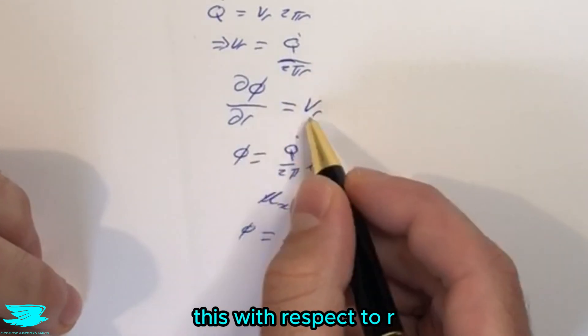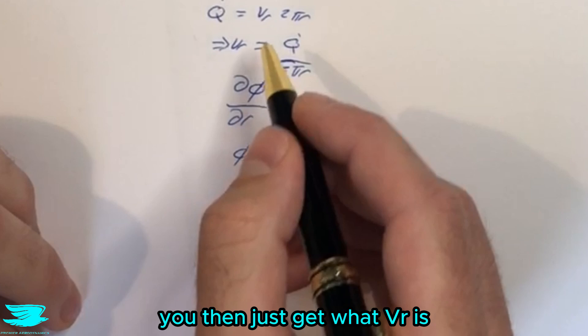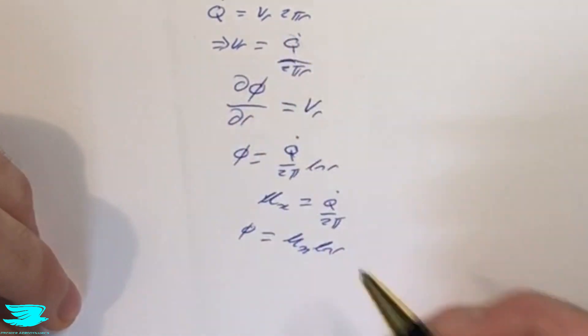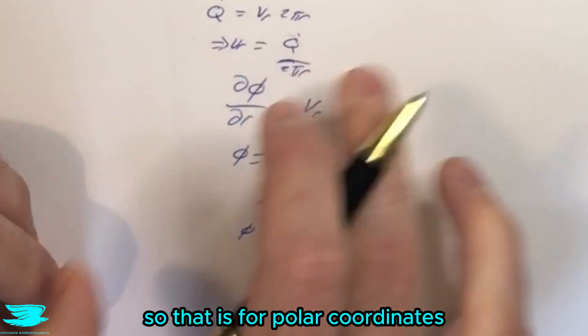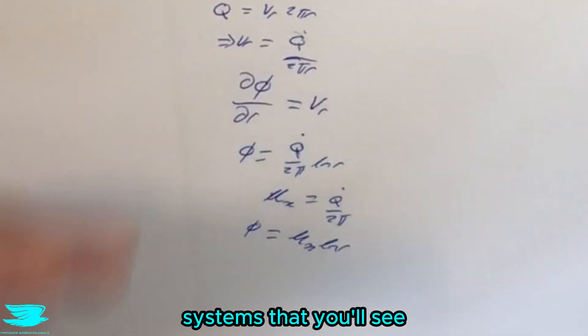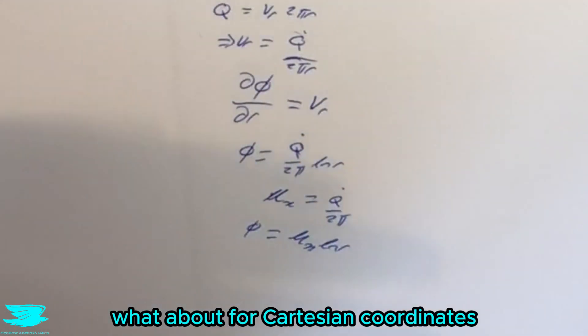And if we were to differentiate this with respect to r, you'd then just get what v_r is, which is this equation here. And that would actually be μ_x over r. So that is for polar coordinates and the two different general systems that you'll see. What about for Cartesian coordinates?